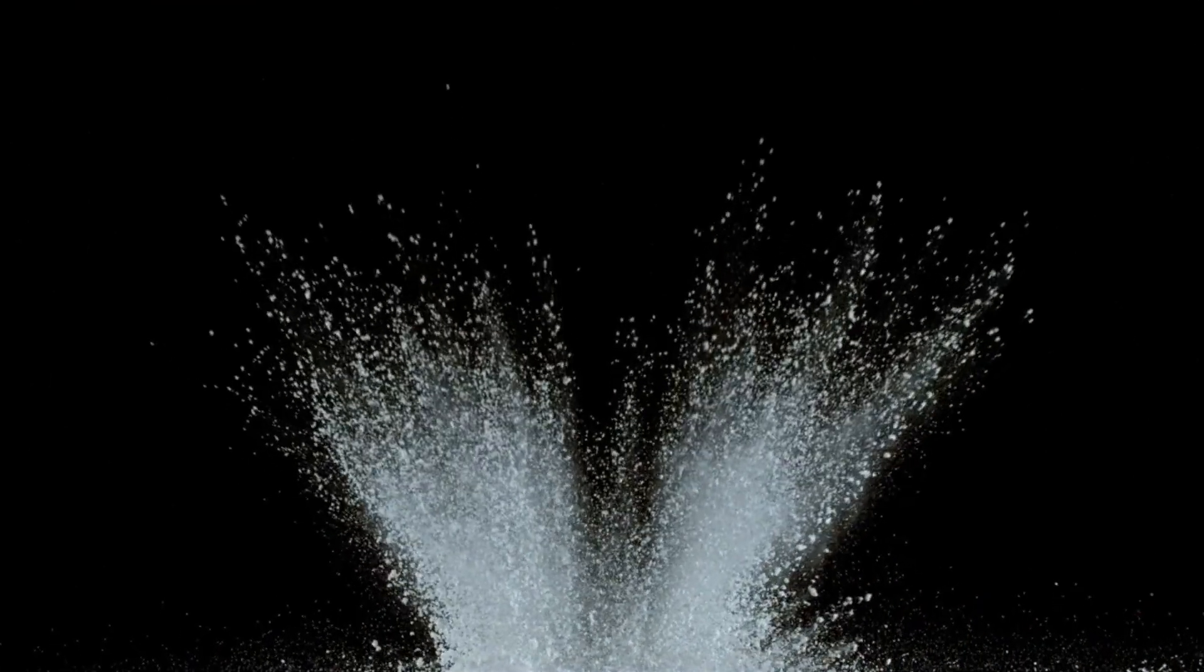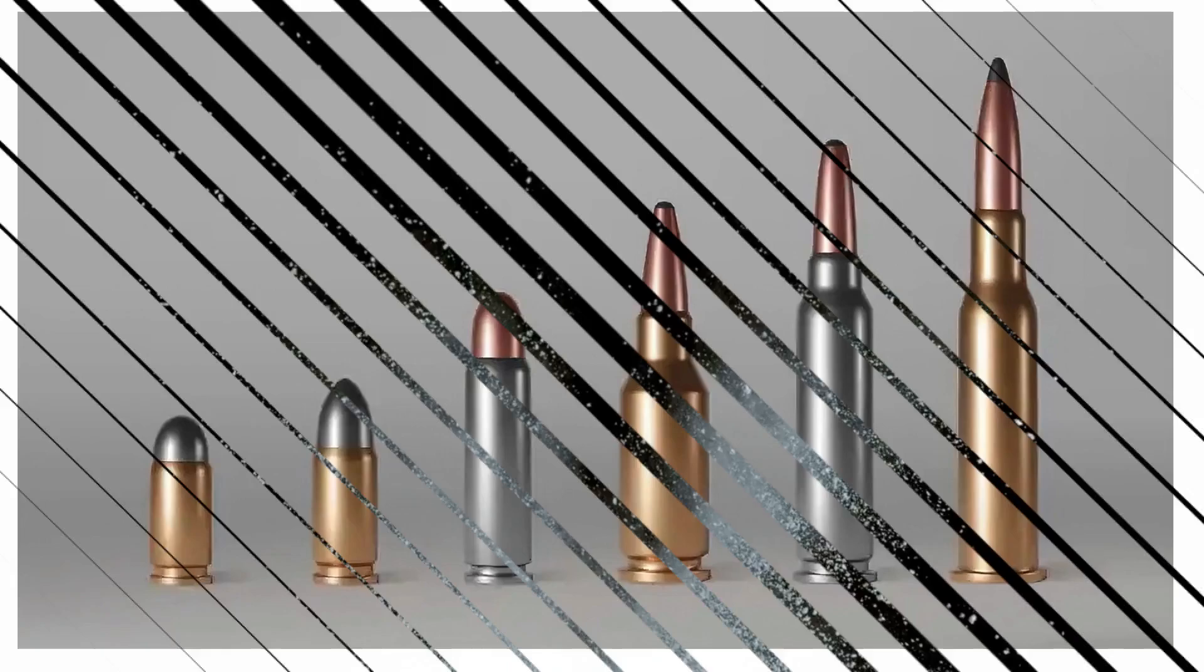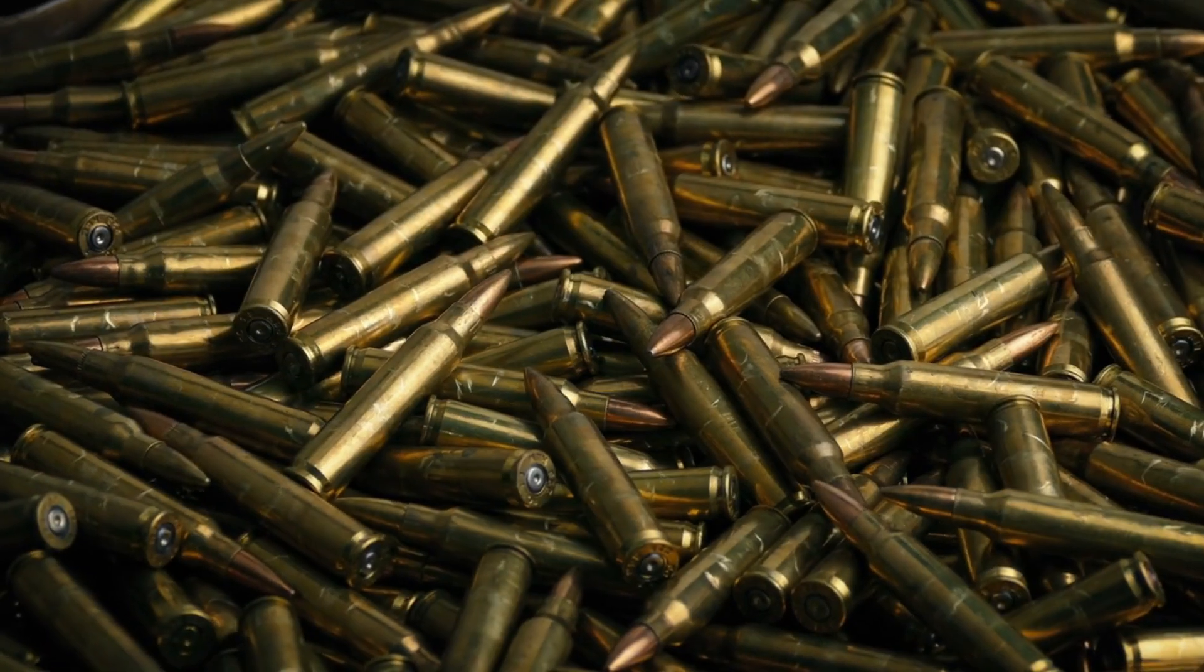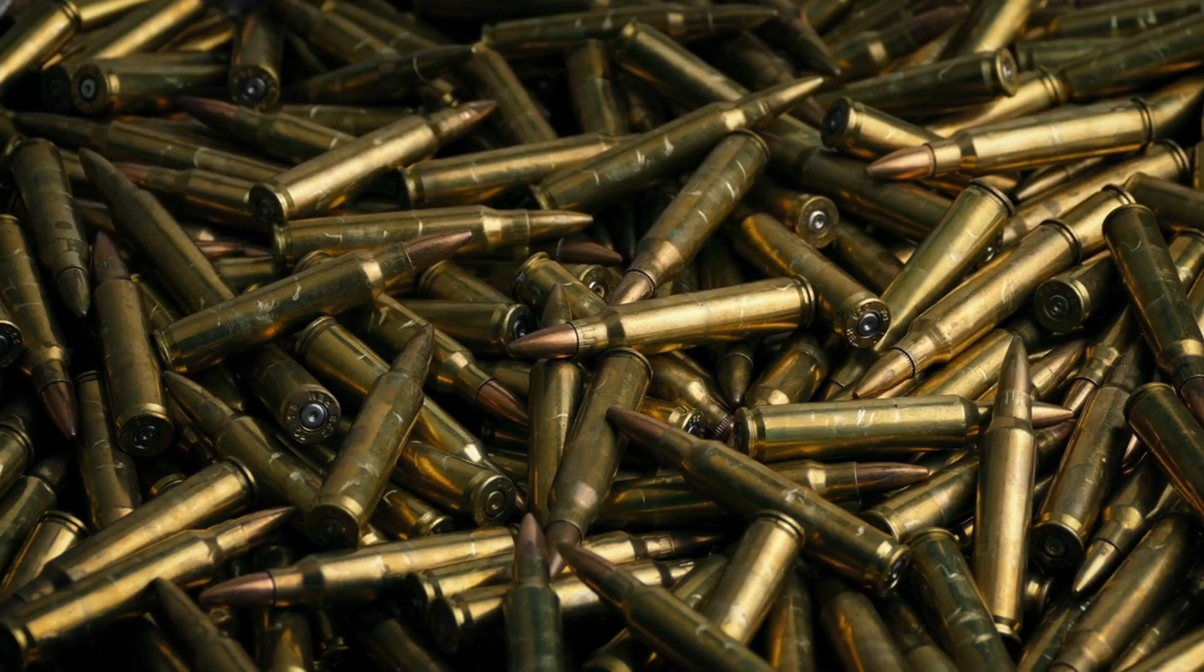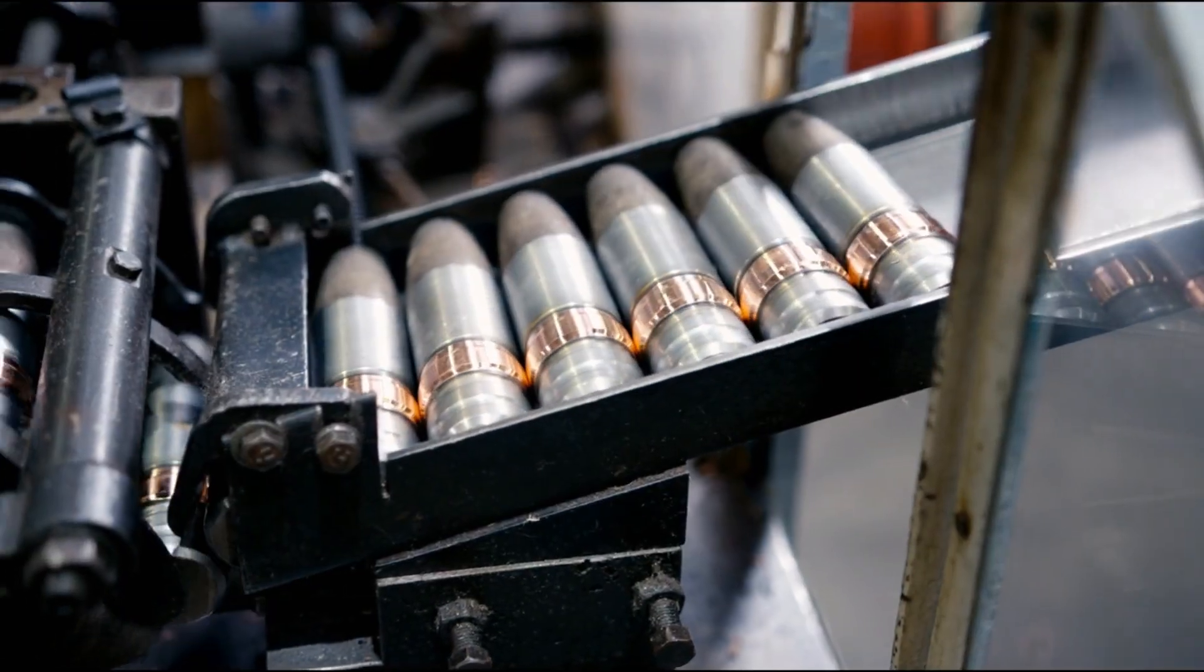Bullets come in various sizes and designs for specific purposes. For smaller calibers like the classic .22, manufacturers use a cold forming process, where a press shapes lead wire into the desired bullet form, allowing mass production.